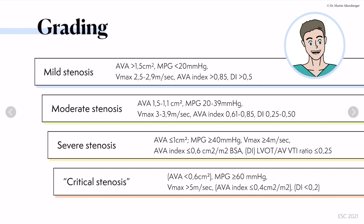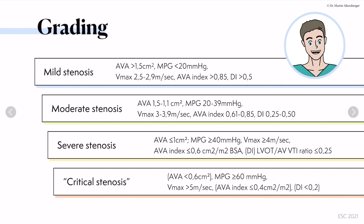In a severe stenosis, if you cannot measure the LVOT properly — because sometimes the LVOT is very hard to measure, and with bad or reduced image quality you may not measure it accurately — always keep in mind that the dimensionless index helps. You simply calculate the LVOT VTI divided by the aortic valve VTI, and a ratio below or equal to 0.25 points towards a severe aortic stenosis.